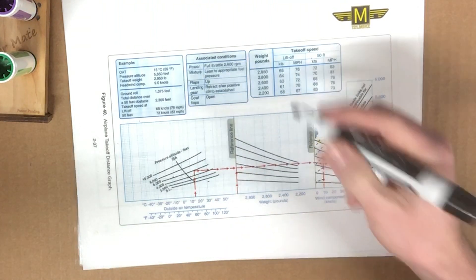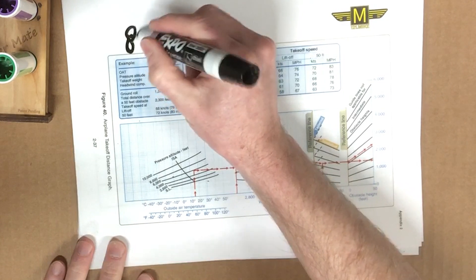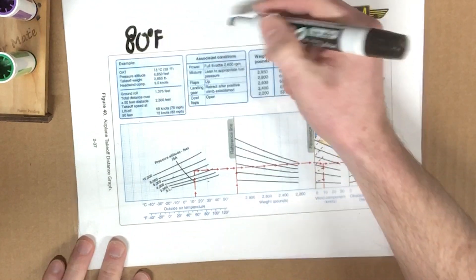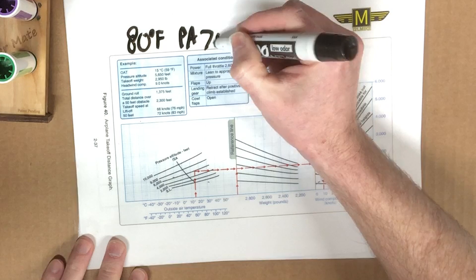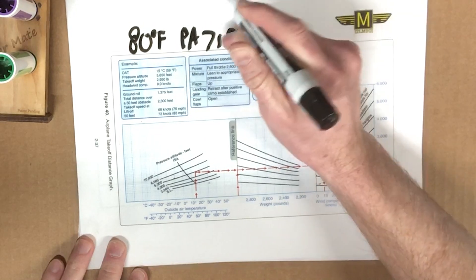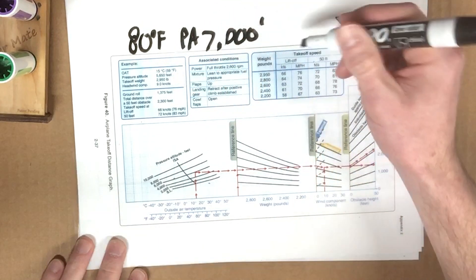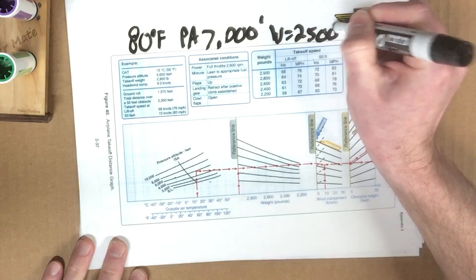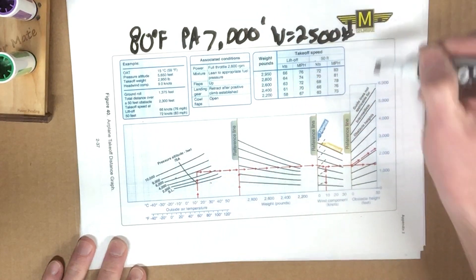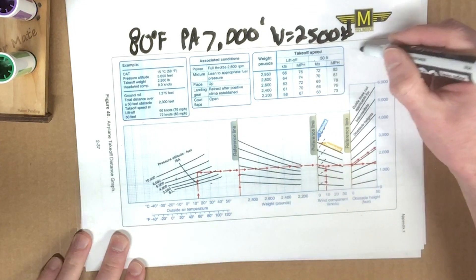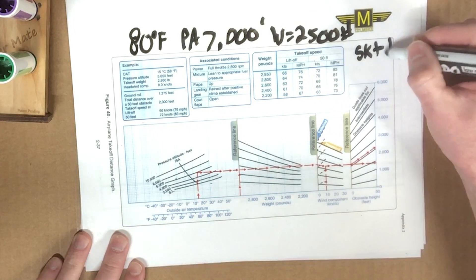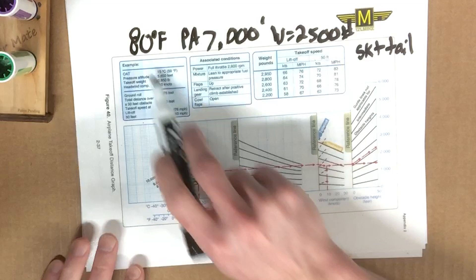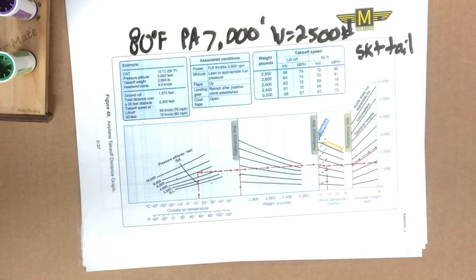So for example, you're at 80 degrees Fahrenheit. Let's say you're at a pressure altitude of 7,000 feet, weight equals 2,500 pounds, and you have a 5-knot tailwind. Okay. There's your scenario. Pause now if you want to try this one out on your own before I show you how to do it.